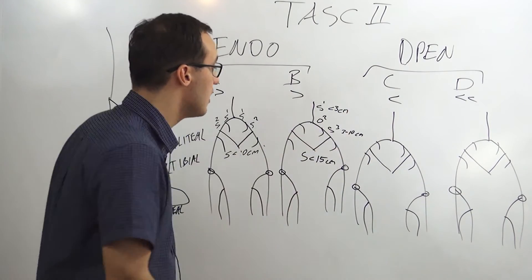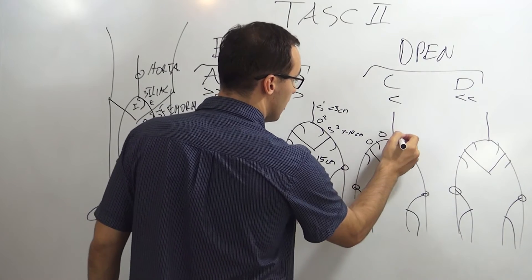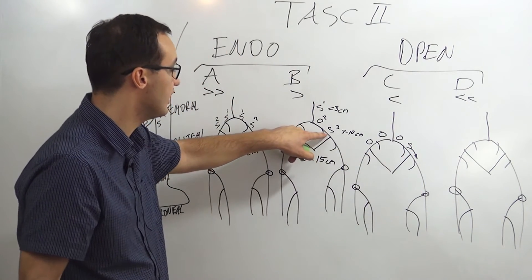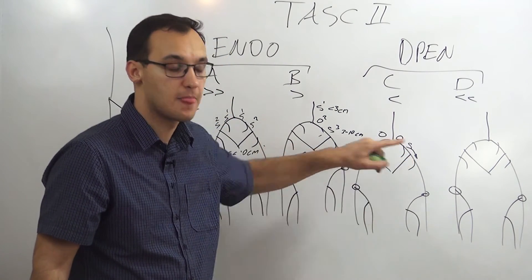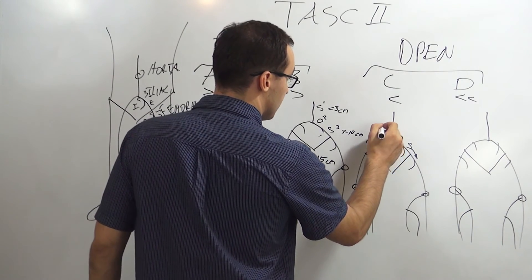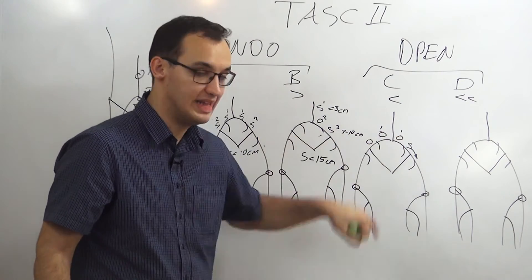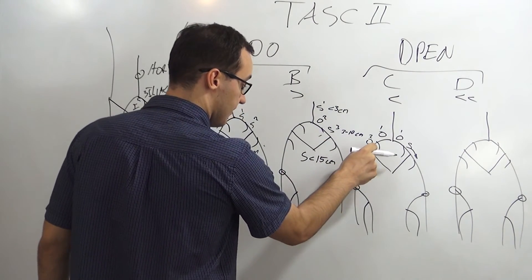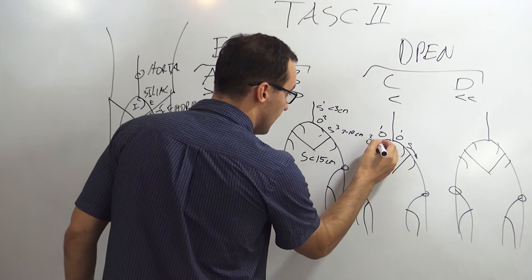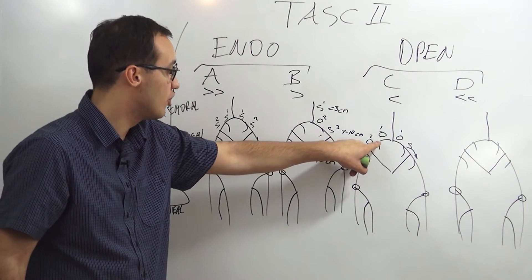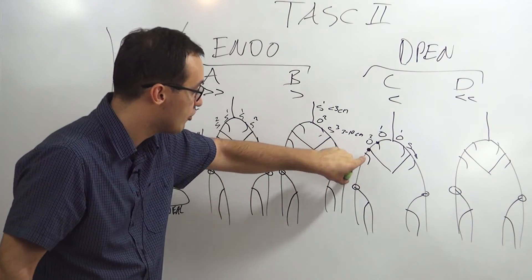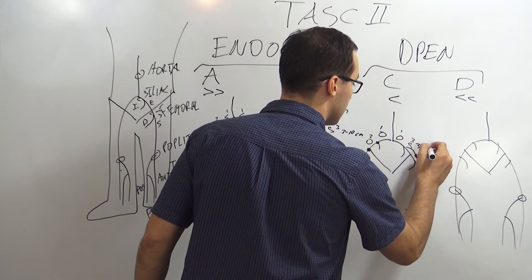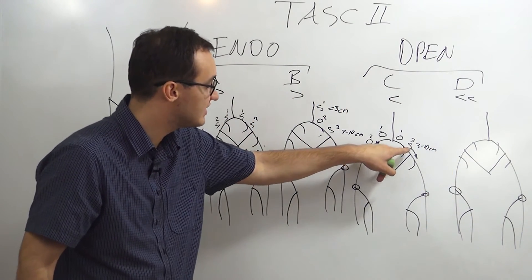For Type C patients, the iliac pattern starts as occlusion-occlusion-occlusion-stenosis (O-O-O-S), where the stenosis is extending down from the external iliac into the common femoral. One option is occlusion of both common iliacs. Another option is occlusion of one external iliac with involvement of the origins of the internal iliac and common femoral. A third option is a 3-to-10 centimeter stenosis but with extension into the common femoral.